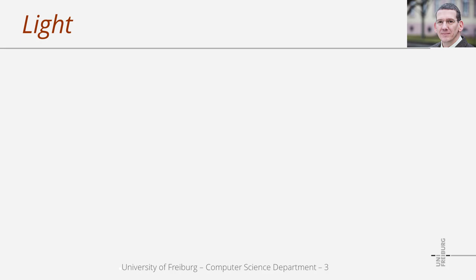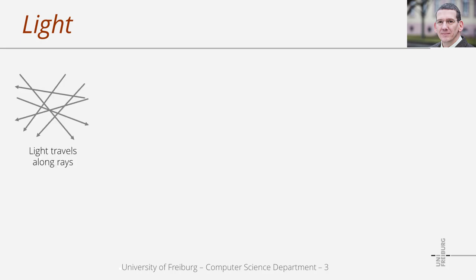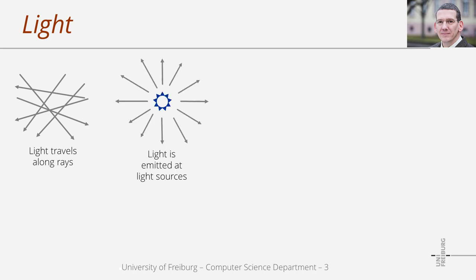Light consists of photons which carry some small amount of energy, and these photons move along straight lines at infinite speed. Here we see some lines to indicate the light transport in a scene. If we consider a specific point in volume, we generally have light transport along all lines with arbitrary directions that intersect this point. The photons that represent light are generated by sources, which generate photons per time at a position into some direction.